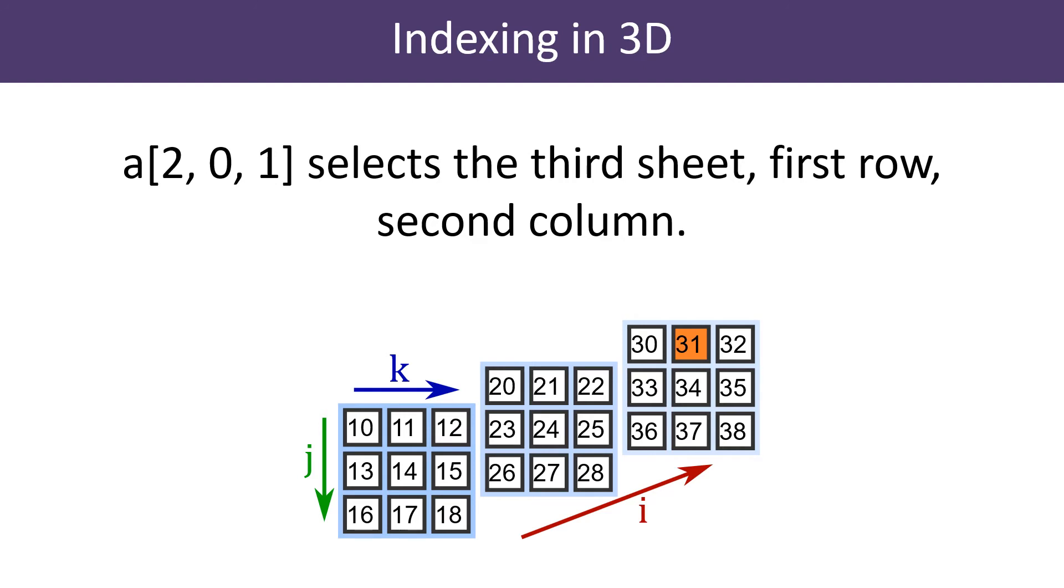We have separated the sheets out in this diagram, so you can see all the values. It shows element a[2,0,1]. This selects sheet 2, row 0, column 1, which contains the value 31. Notice that all three coordinates are enclosed within the square brackets, separated by commas.